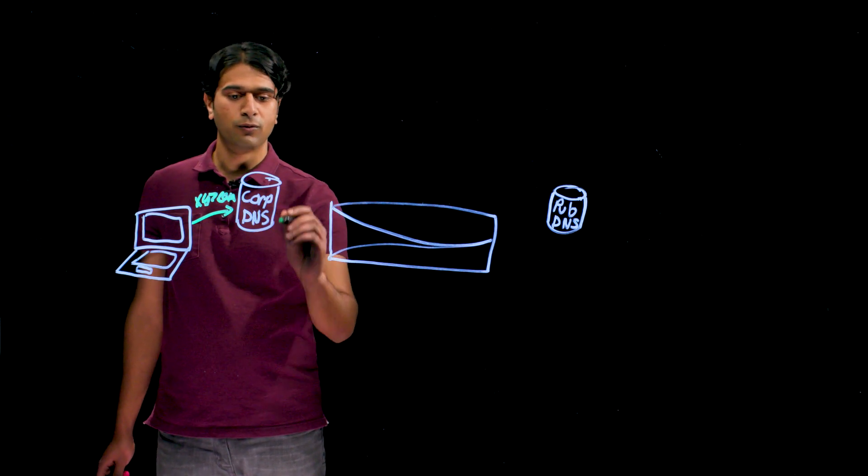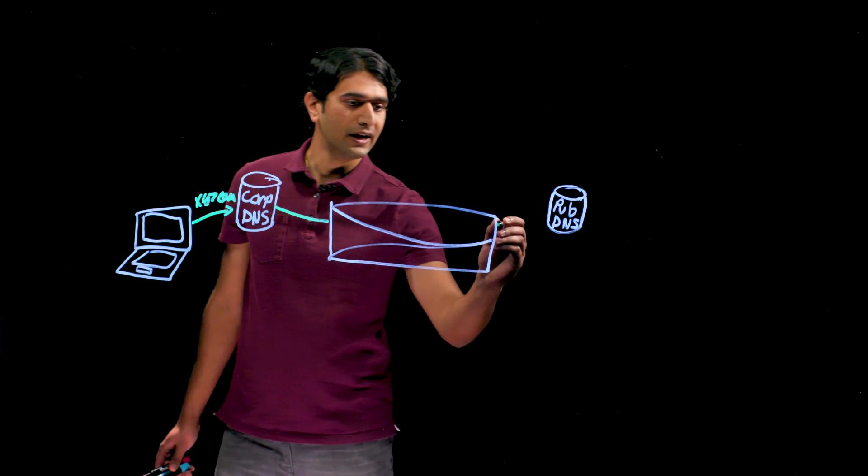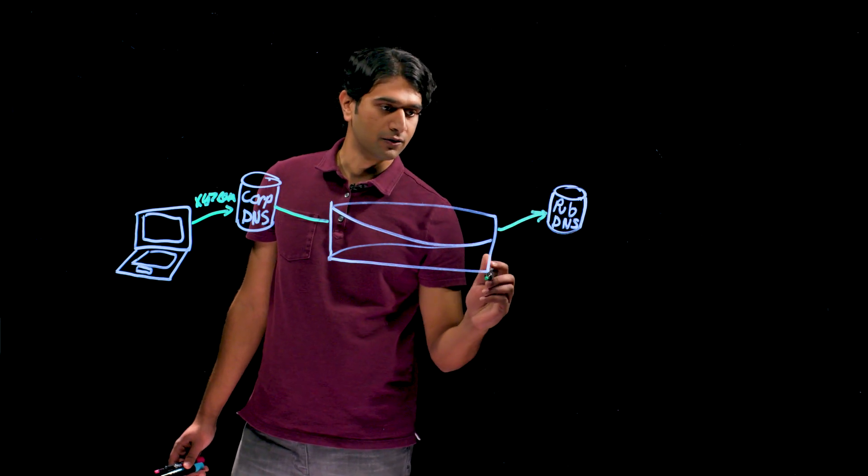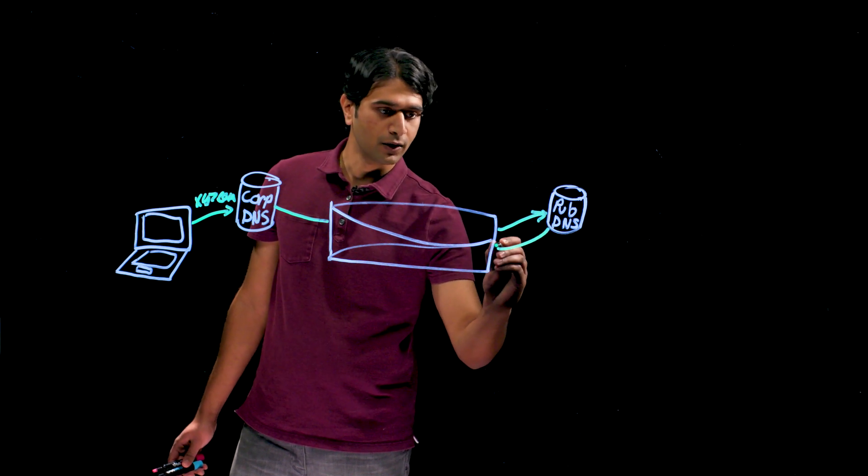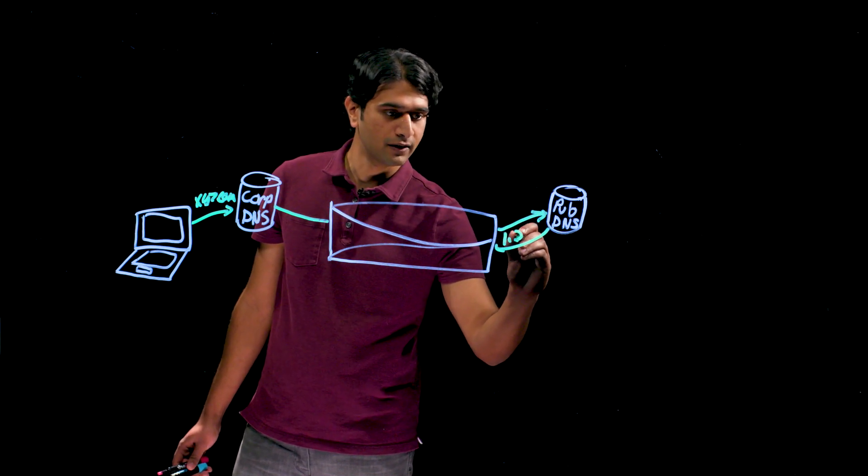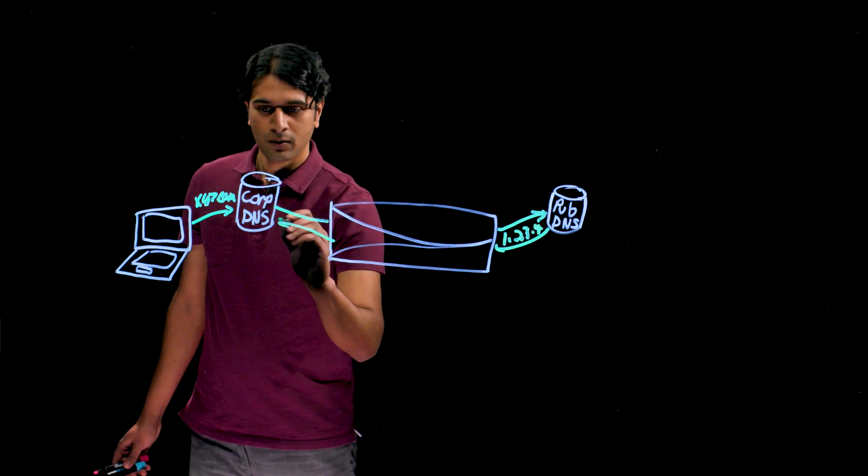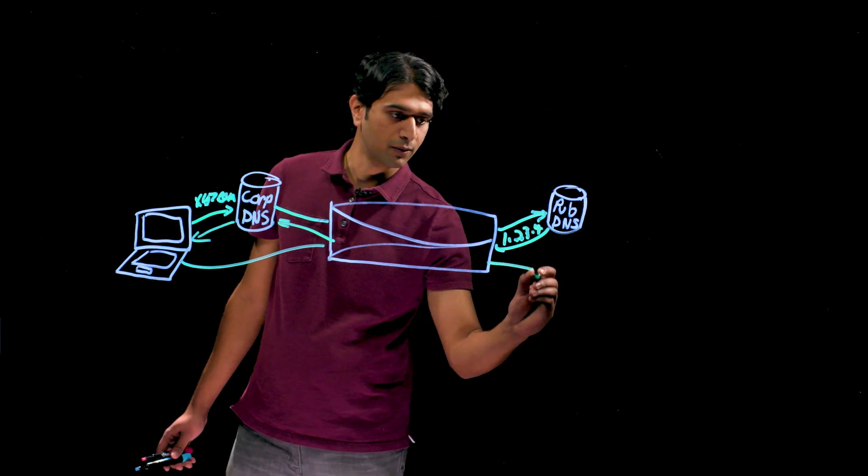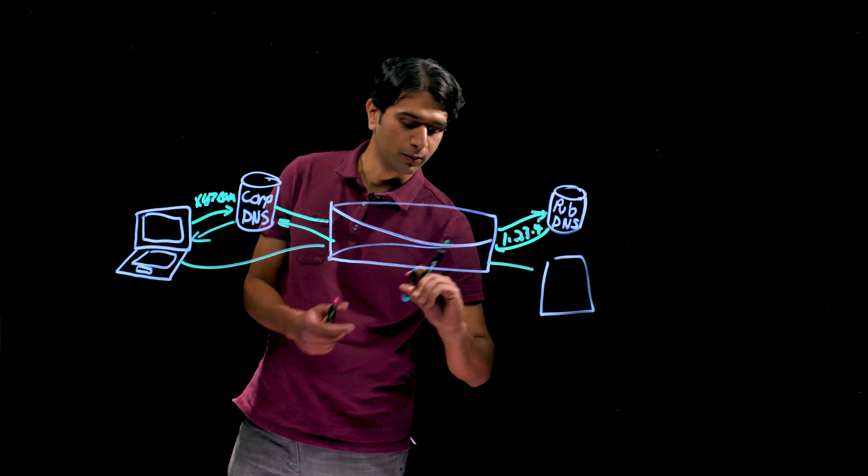This internal DNS server will forward this request to a public DNS server via a next generation firewall. This public DNS server will respond with a machine usable IP address that the host will use to connect, something like 1.2.3.4. Once the host receives this response it'll reach out back through your next generation firewall to connect to the resource and the user can go about their work.